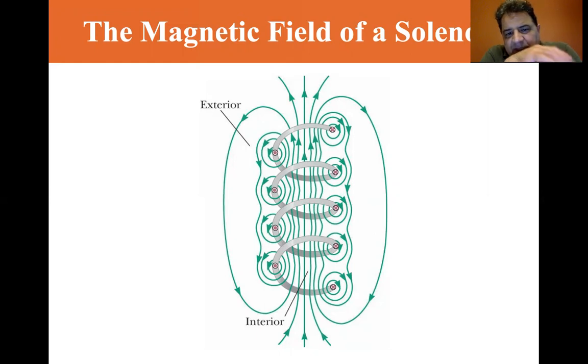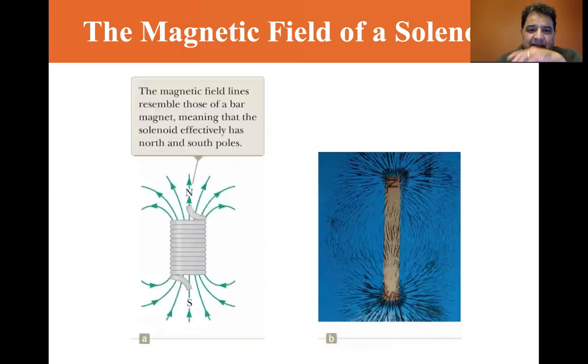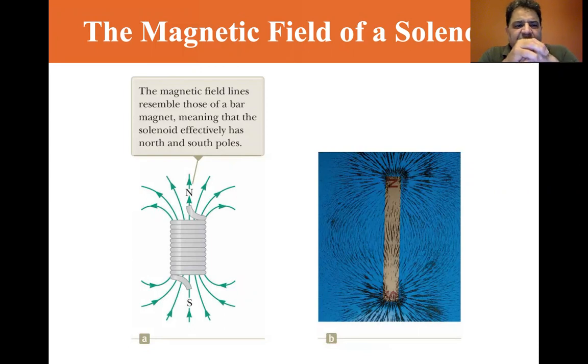So that on the exterior you get this, basically it looks like a magnet. If you look at the magnetic field lines, they resemble those of a bar magnet, meaning that the solenoid effectively has a north and south poles. We saw that in the experiment last Wednesday.